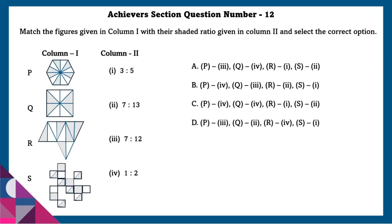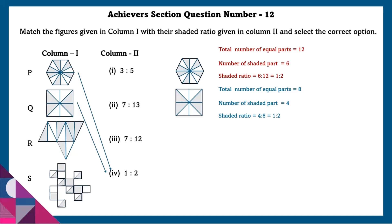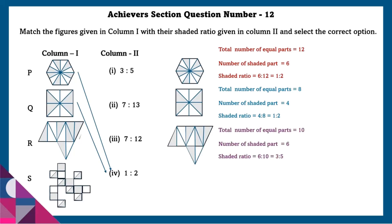Achiever section question number 12: Match the figure in column 1 with their shaded ratio in column 2. In the first figure, total equal parts equals 12, shaded parts equals 6, so shaded ratio is 6:12, that is 1:2. Second figure: total parts equals 8, shaded equals 4, shaded ratio is 4:8 or 1:2. Third figure: total parts equals 10, shaded equals 6, shaded ratio is 6:10 or 3:5.